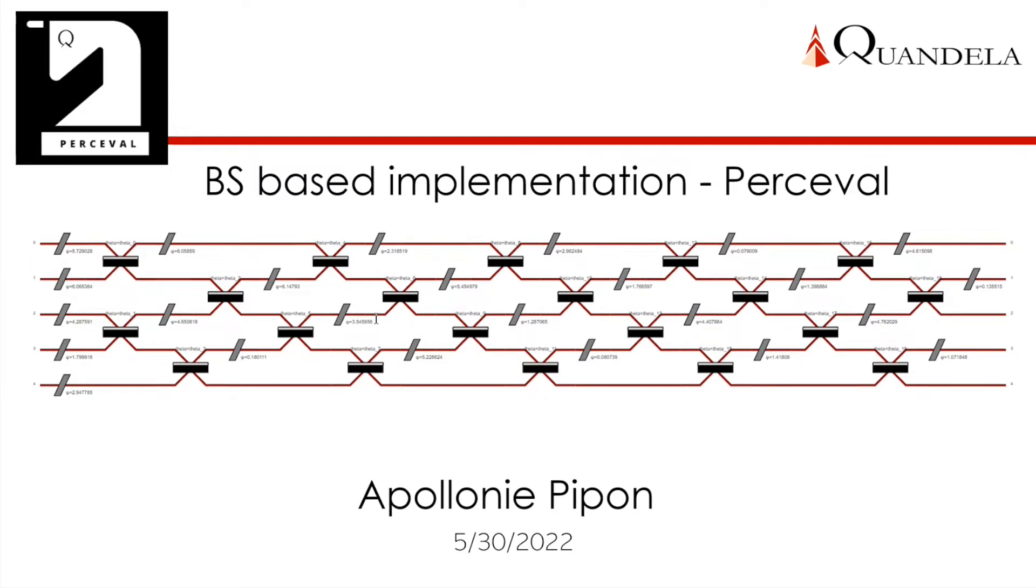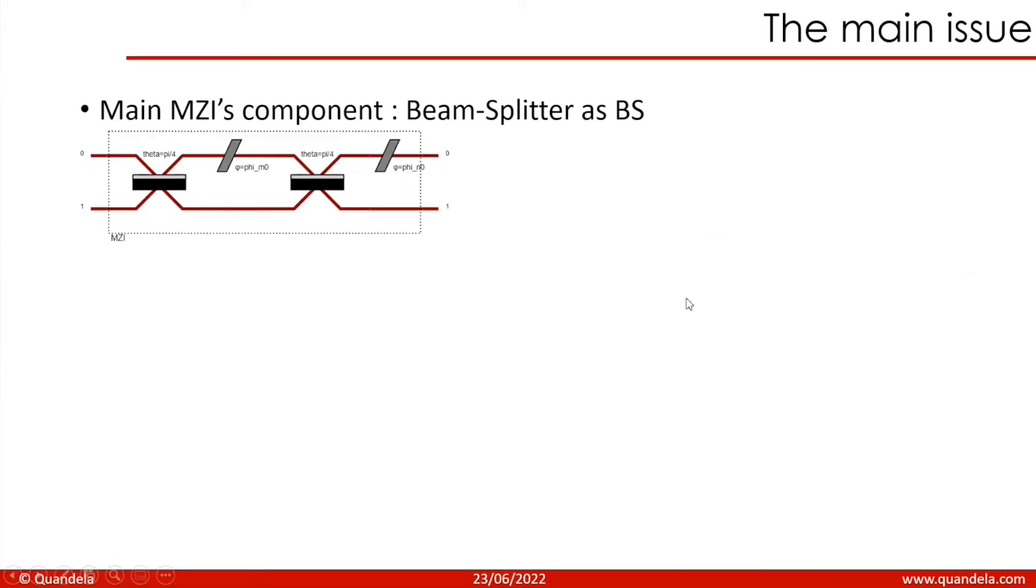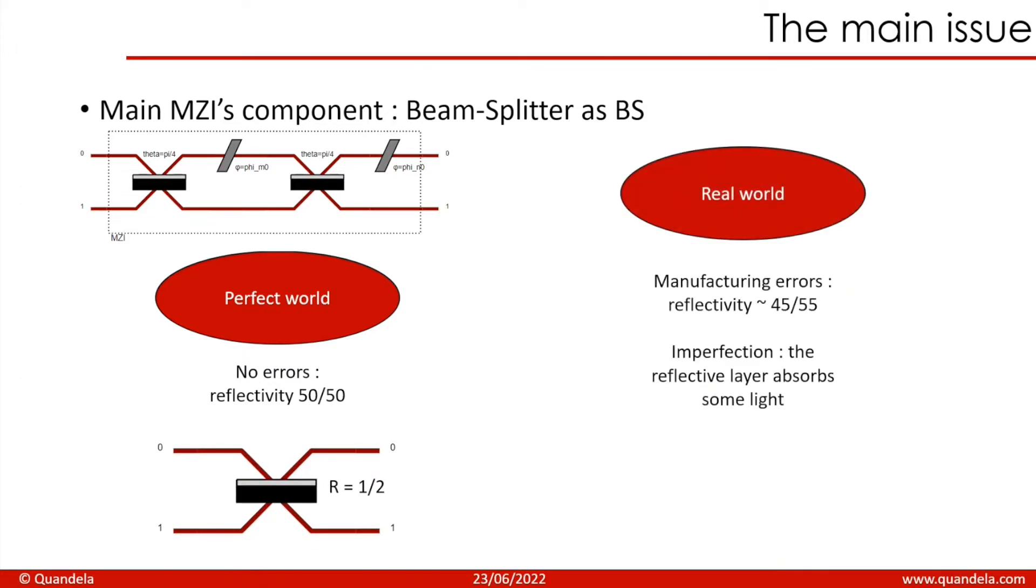The main component of the Mach-Zehnder interferometer is the beam splitter, which is called BS to simplify it. The problematic of the presentation is the impact of manufacturing errors on the beam splitter. In the perfect world, there is no manufacturing errors, the reflectivity is 50-50, but in the real world, manufacturing errors disturb the reflectivity and it can be, for example, 45 on 55. So there are manufacturing errors that we need to deal with.